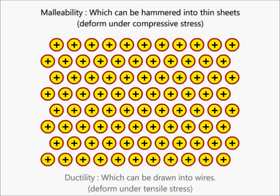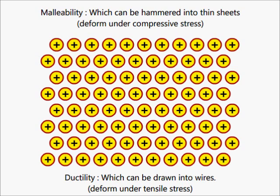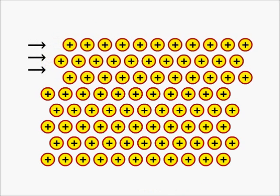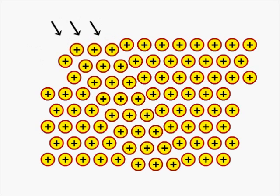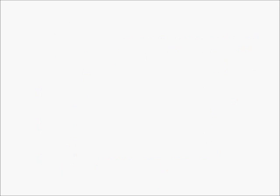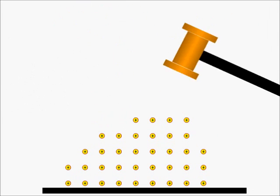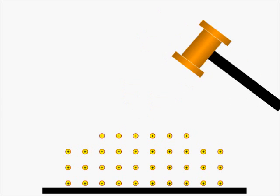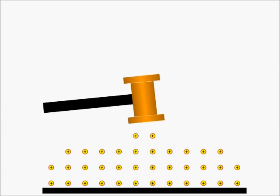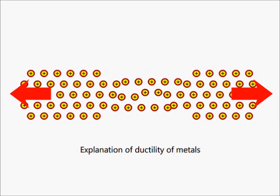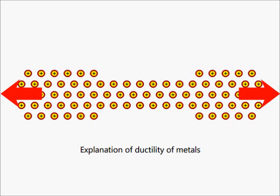Properties like malleability and ductility can also be explained. The metal ions are packed in layers, and when external force is given, a layer can slide over the adjacent layer. A metal can be hammered into thin sheets or it may be drawn into wires. The metal ions re-arrange their position, keeping the structure same in the sea of electrons, which acts as a glue.